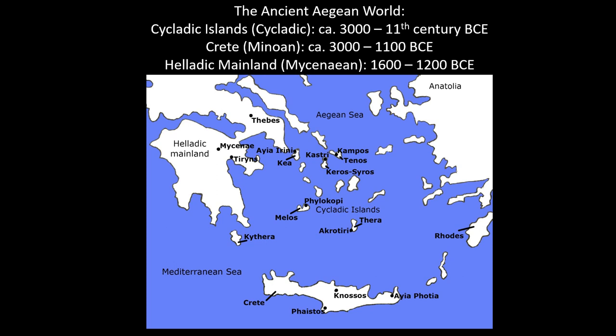The ancient Aegean world comprises three cultural groups. You have the people of the Cycladic Islands, which is that collection of islands in the center of the map. You have the people of Crete, sometimes referred to as Minoans, on the large island at the bottom. And then you have the people of the Helladic mainland, the Mycenaeans, located on the left side of the map.